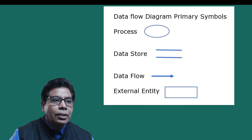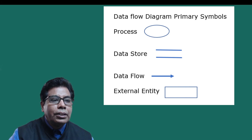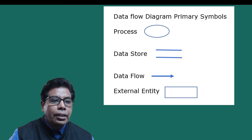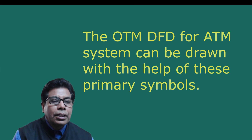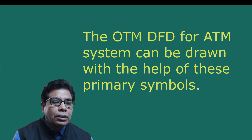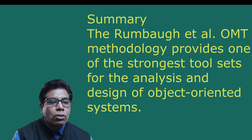The symbols are shown in the diagram — the process is represented with an ellipse, the data store with two lines, the data flow with an arrow, and the external entity with a rectangle. The OMT DFD for the ATM system can be drawn with the help of these primary symbols and the system can be analyzed. The Rumbaugh et al. OMT methodology provides one of the strongest tool sets for the analysis and design of object-oriented systems.